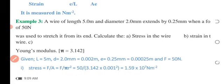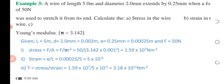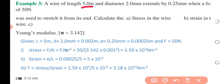Let's consider some examples involving Young's Modulus, stress, and strain. In Example 3, we have a wire of length 5 meters and diameter 2 millimeters, extended by 0.25 millimeters when a force of 15 Newtons was used to stretch it. The given parameters are: length = 5 m, diameter = 2 mm, and the force of 15 N extends the wire by 0.25 mm.